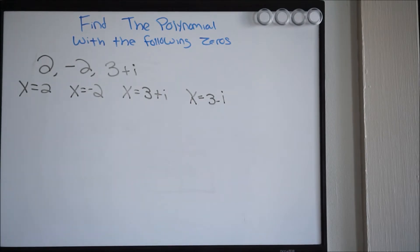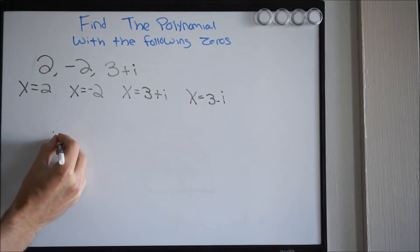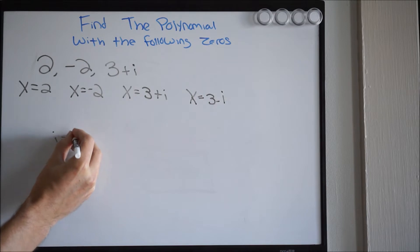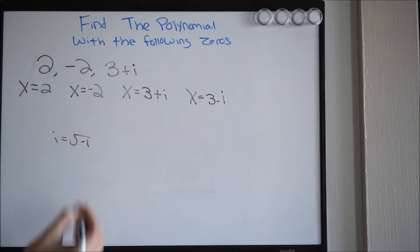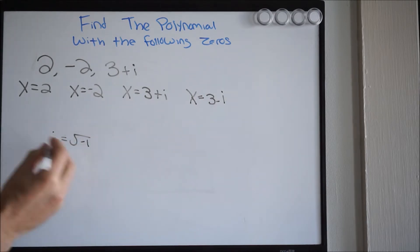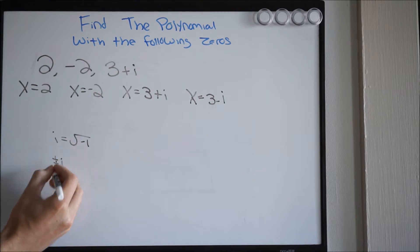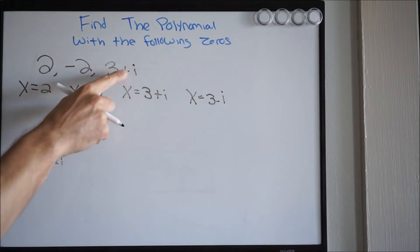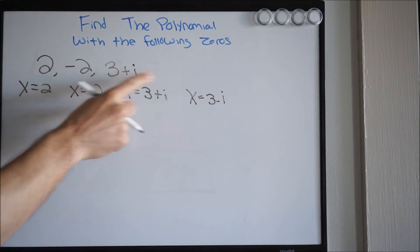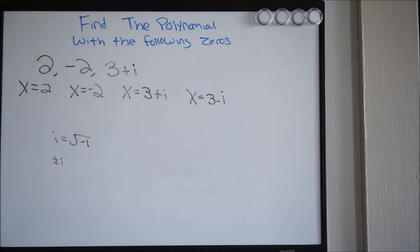Remember where i comes from — it comes from the square root of negative 1. i equals the square root of negative 1. So you know that i has to be either plus or minus. So if they give you one, just make sure you list the other as well.